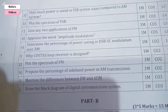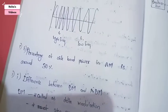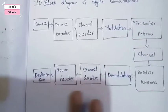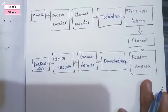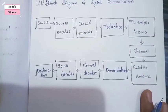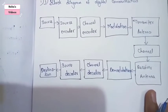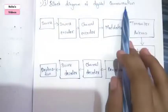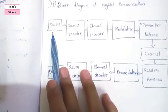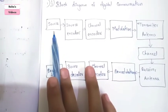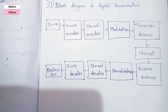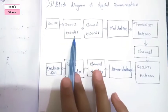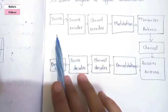The last question asks to draw the block diagram of digital communication. In the next video I'll make the answers of long questions for the same question paper. The block diagram of digital communication: first a source will be there like your voice or email or any message signal.